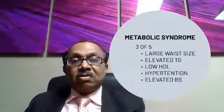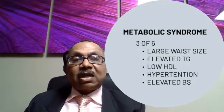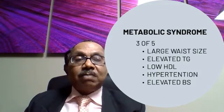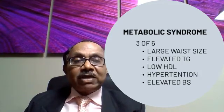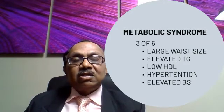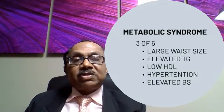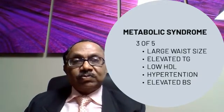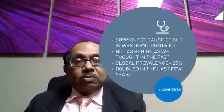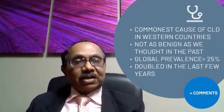There is also the metabolic syndrome. What is metabolic syndrome? It consists of large waist size, elevated triglycerides, low HDL, hypertension, and elevated blood sugars. Three out of these five factors constitutes metabolic syndrome. Some of these individually can contribute to NASH and NAFLD, but together it's like a one-two punch — you are at higher risk of getting NAFLD and NASH.